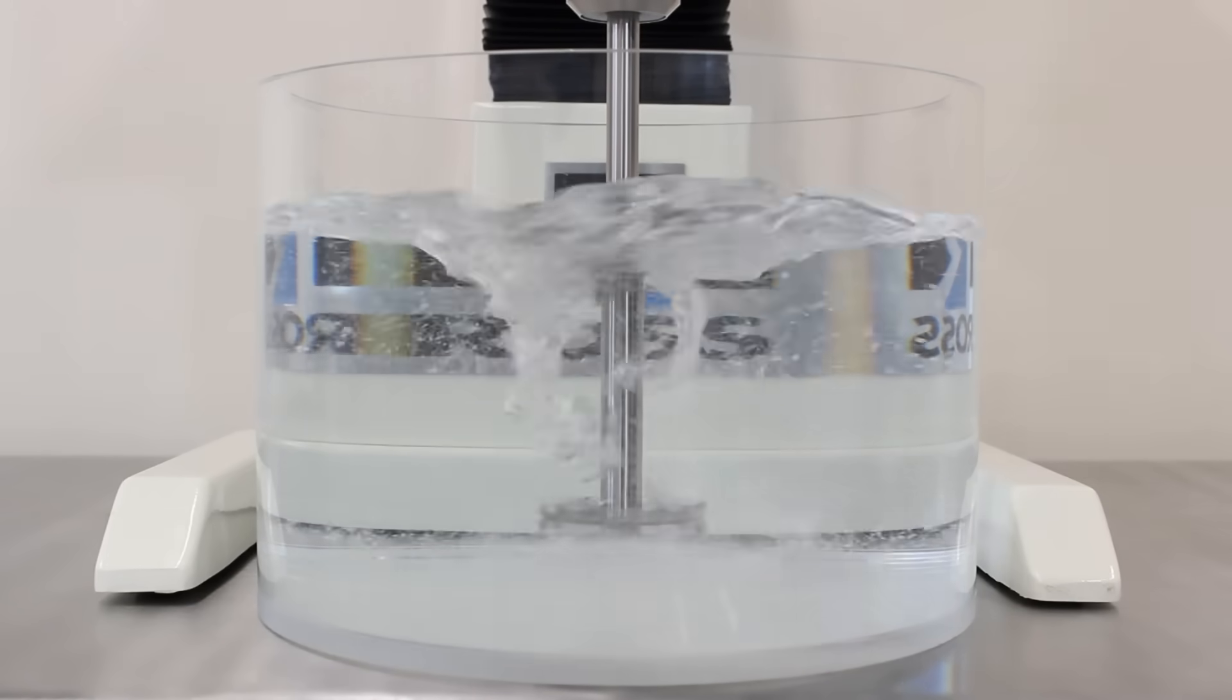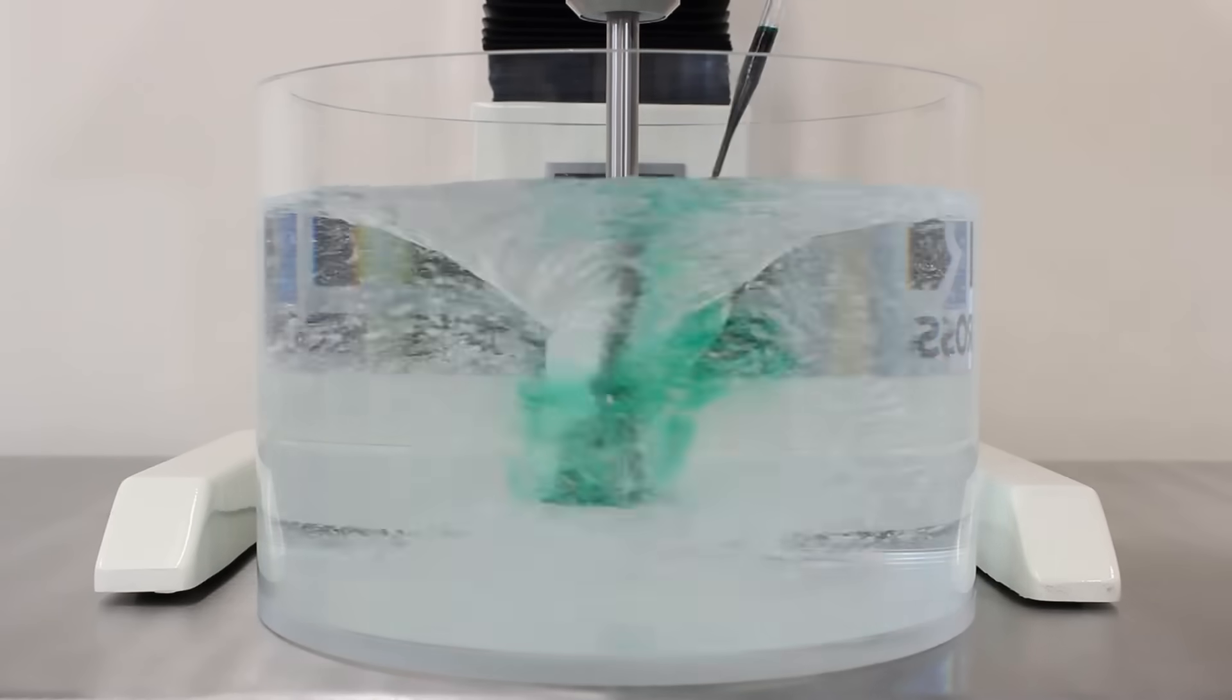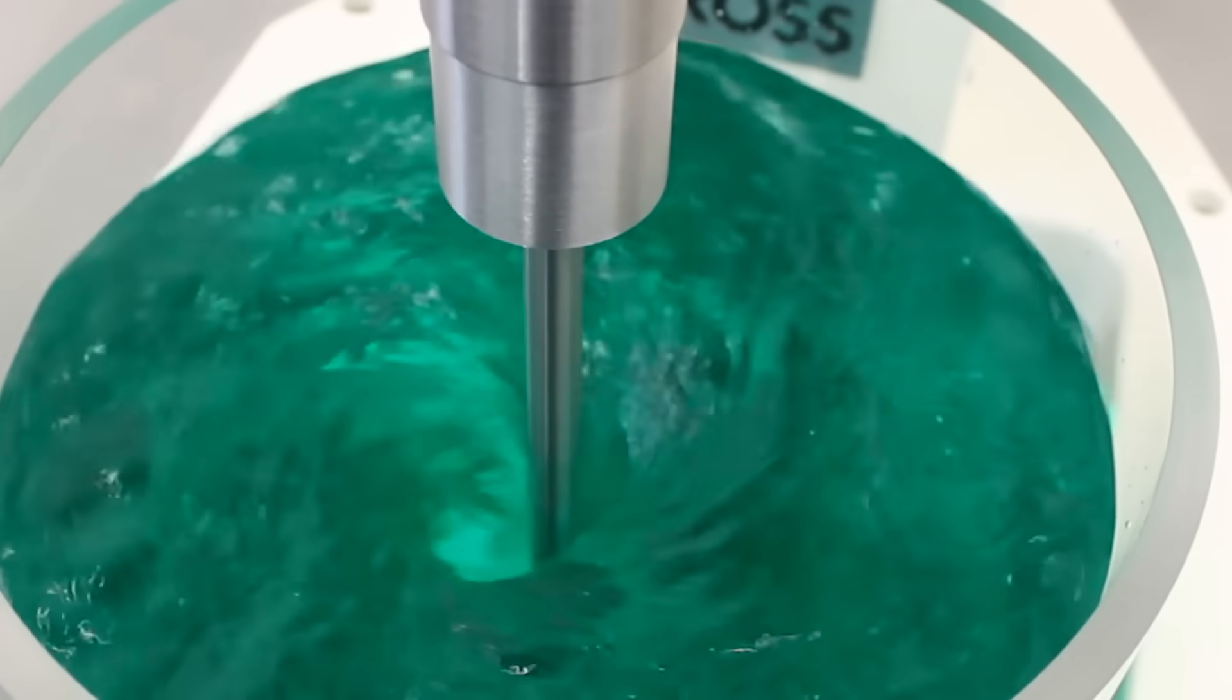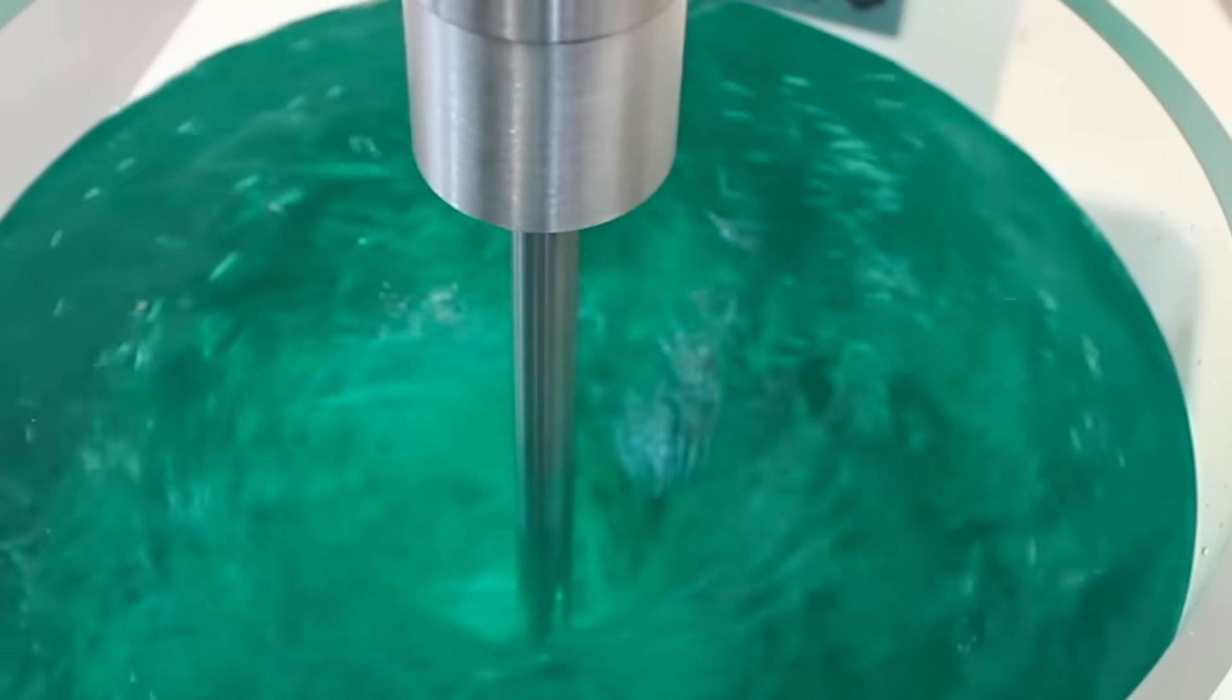The high-speed disperser attachment creates dispersions and emulsions by drawing liquids and solids into the vortex of the high-speed blade, where these ingredients are exposed to intense sheer force, creating a uniform product.